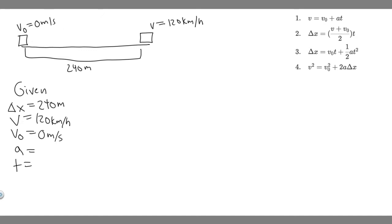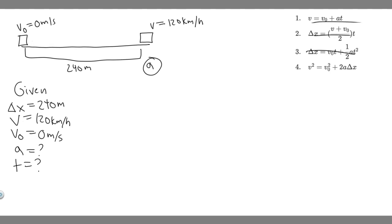a is acceleration — that's what we're solving for in Part A: the minimum constant acceleration. t is time — that's what we're solving for in Part B. So we're solving for both a and t given the other variables. Now, we need to make sure everything is in the correct units. The distance is in meters, but the velocity is in kilometers per hour, so we need to convert it to meters per second.